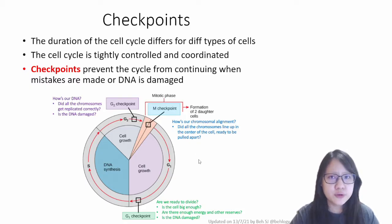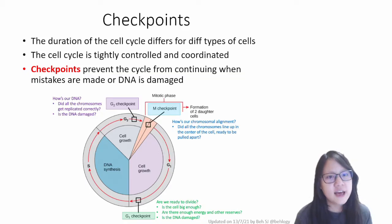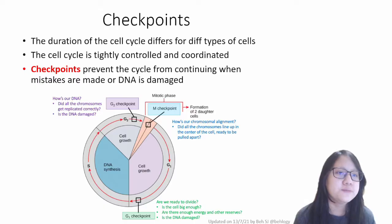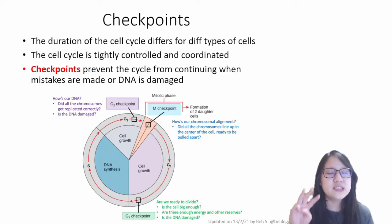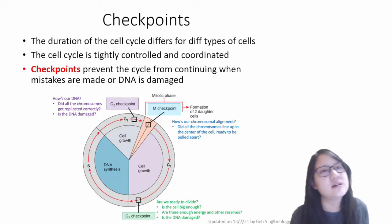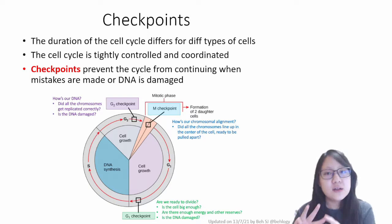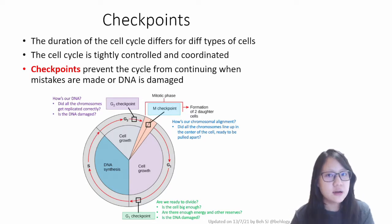These are not for you to memorize. These are for you to understand that the cell cycle is tightly controlled and coordinated. Moving on, we'll be talking about three specific topics — the regulation of the cell cycle in three perspectives. Number one is telomeres. Number two, we'll be talking about stem cells. And number three, cancer.